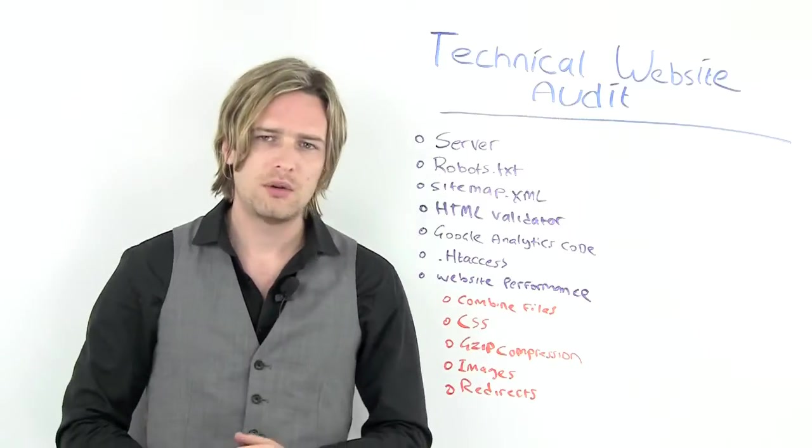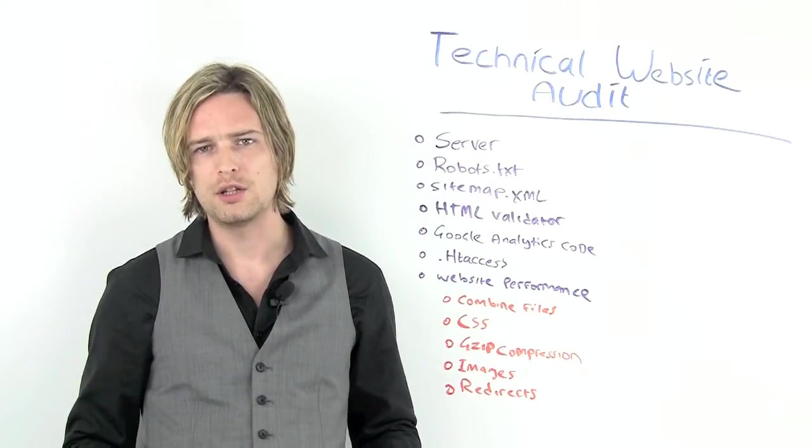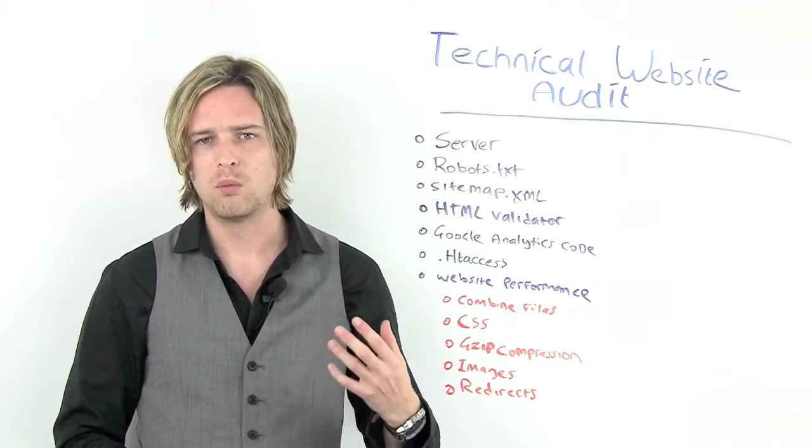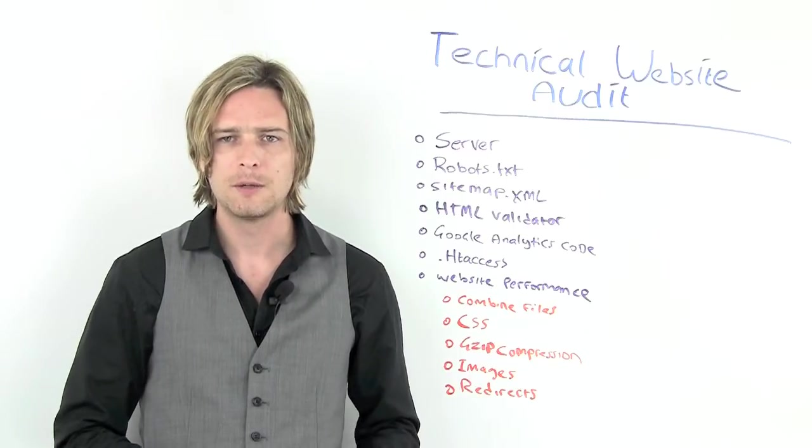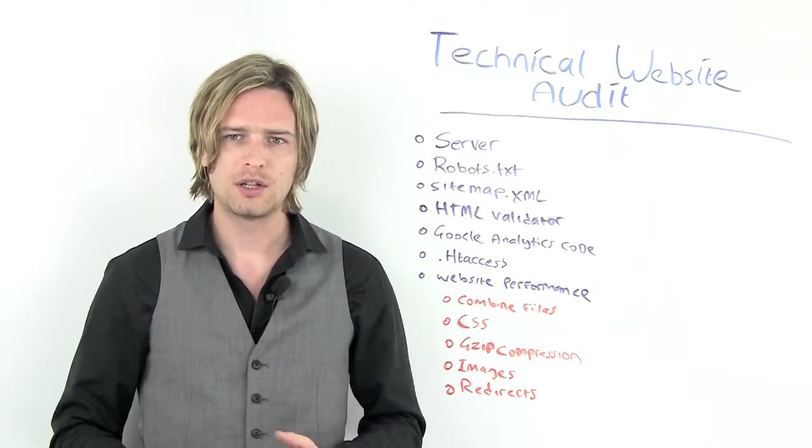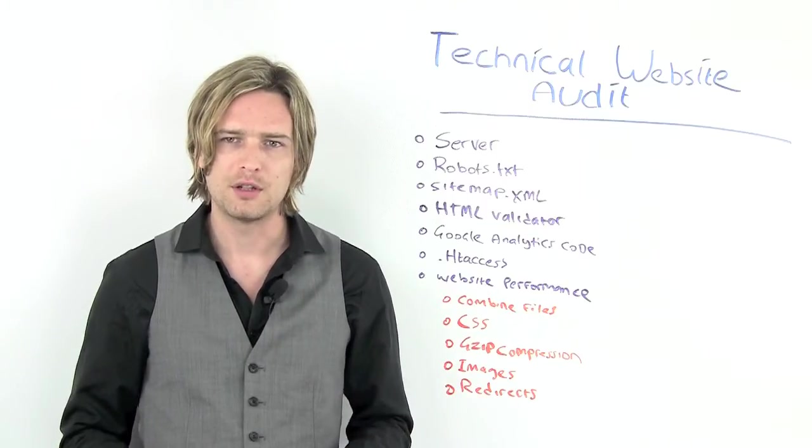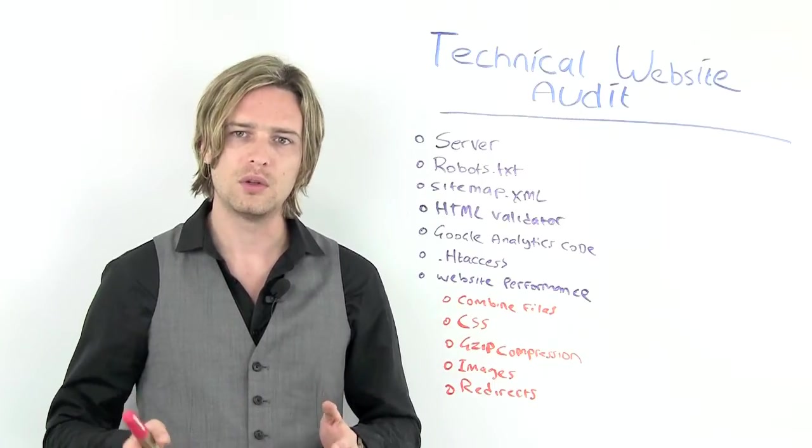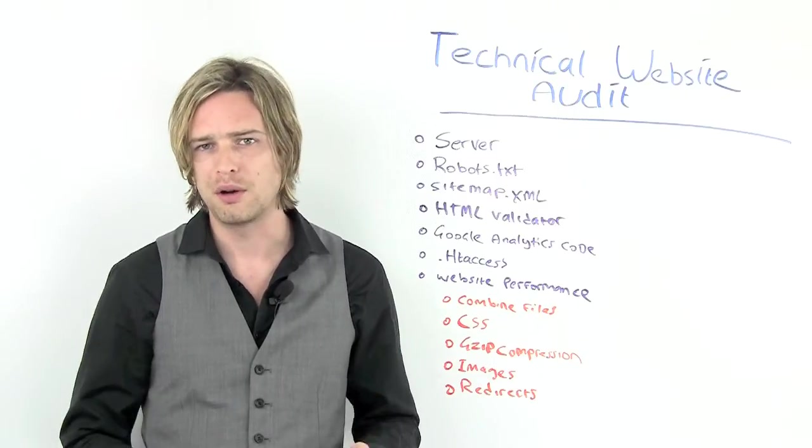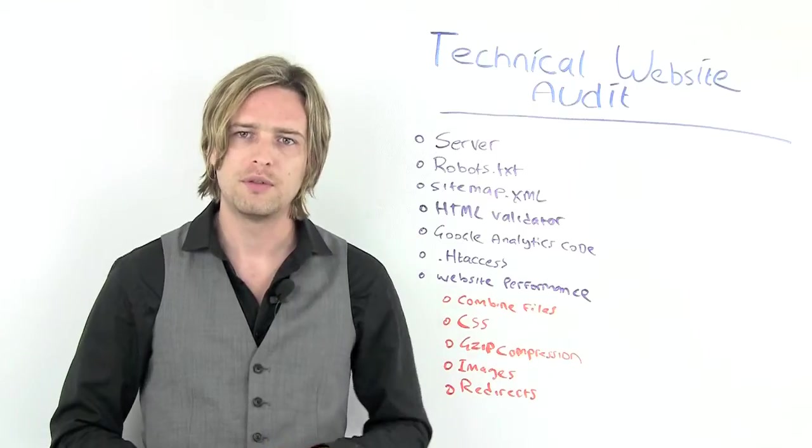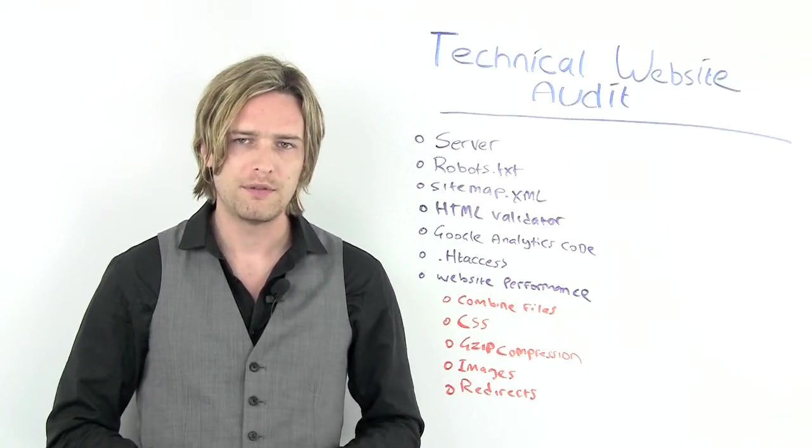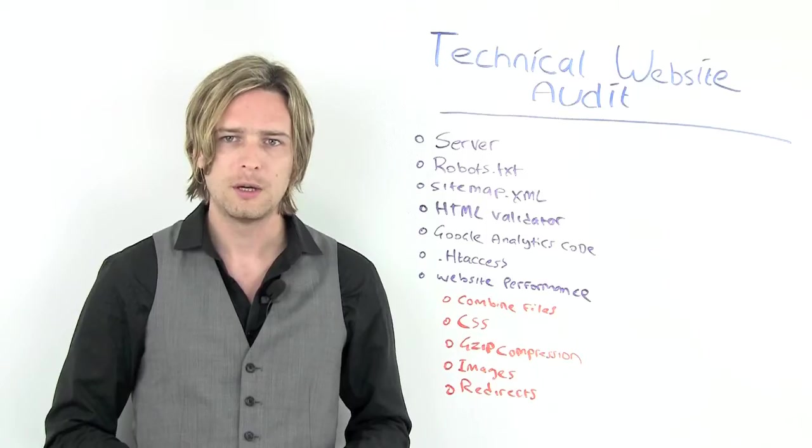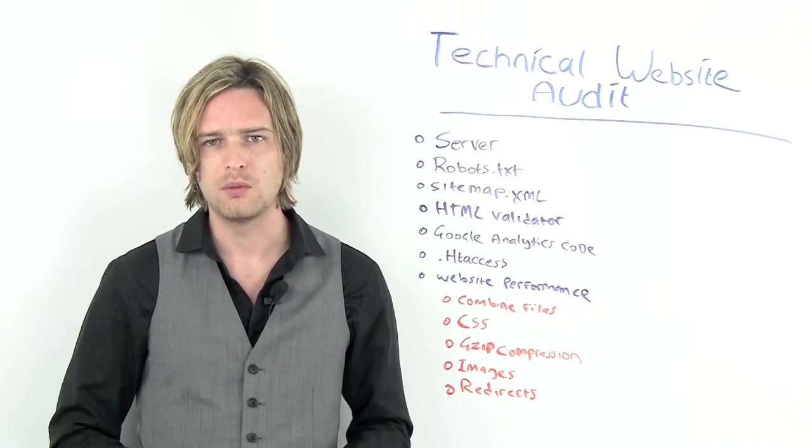So the next thing on our list here is the robots.txt file. A very basic on-page element that most people are familiar with. Essentially, this file will determine what aspects or what parts of your site can be indexed and what parts can't be indexed, as well as setting a few specific parameters for indexing types of files or specific directories in your site. These commands are given to crawlers or spiders that will come and index your site from different search engines.